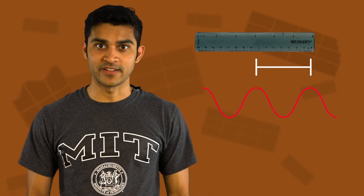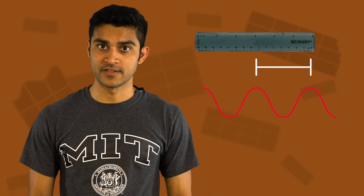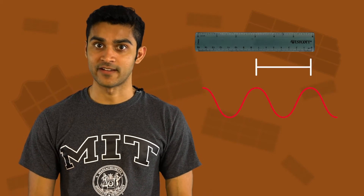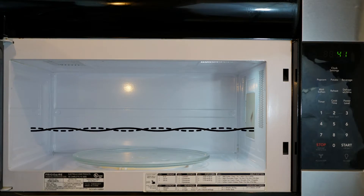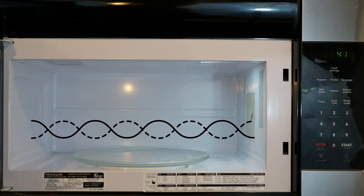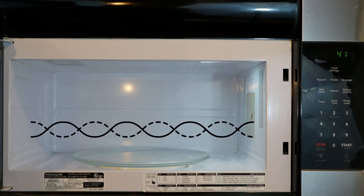So how do I expect you to measure the speed of light using a microwave and a chocolate bar alone? How about by using a ruler? If we can measure the wavelength of our microwaves, we can use that to calculate the speed of light. A microwave works by reflecting microwaves back and forth, which causes the water molecules in your food to warm up.